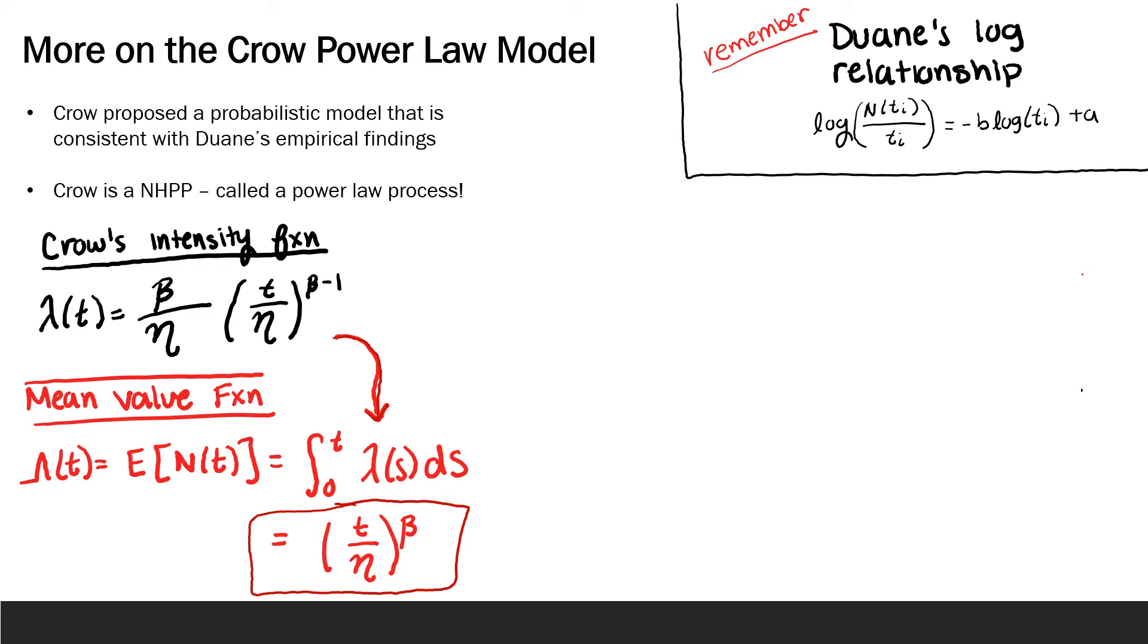because we plugged in Crow's intensity function here for λ(s). Now, if we take the log of the mean value function over t, we're setting ourselves up to see this linear relationship that Duane found here. So, we would get the log of t^(β-1) all over η^β.